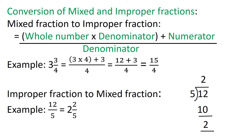Now let us convert an improper fraction to a mixed fraction. Example: convert 12 upon 5 to a mixed fraction. We divide: 12 divided by 5 gives quotient 2 and remainder 2. The quotient will be our whole number, the remainder will be the numerator of the proper fraction, and the divisor will be the denominator. So 12 upon 5 converted to a mixed fraction is 2 and 2 upon 5, where 2 is the remainder and 5 is the divisor.